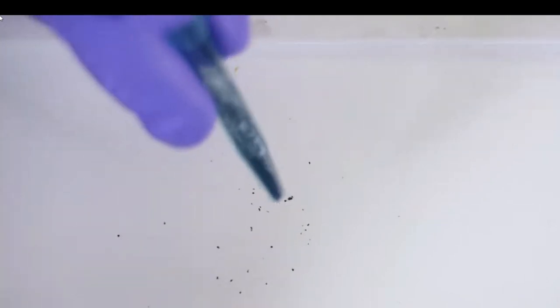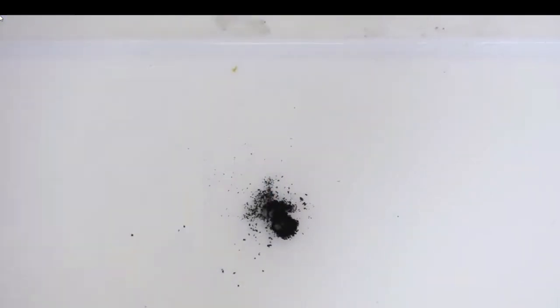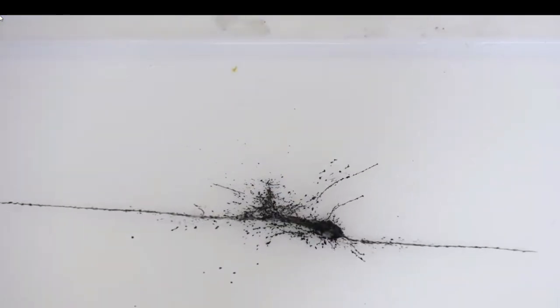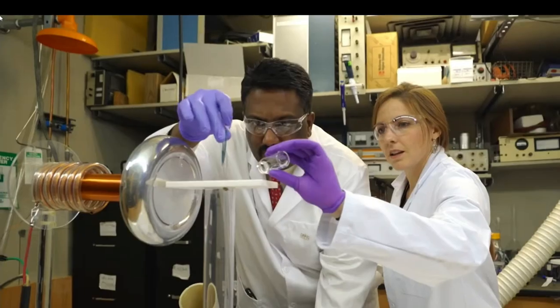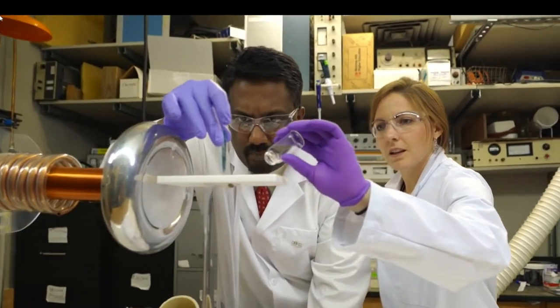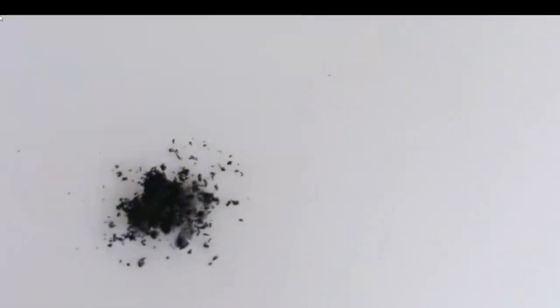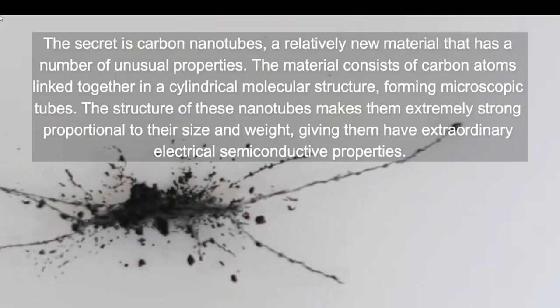And teslaphoresis is, the simplest way to understand it, is self-assembly at a distance, just long-distance assembly of materials. And what we did was, because we're at Rice, we had plenty of nanotubes around, so we decided to use nanotubes. And what we discovered was that these nanotubes can actually string together and form wires by themselves under this electric field.